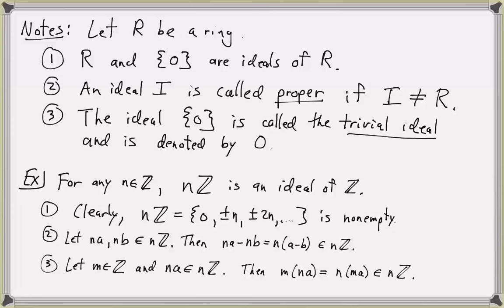These are the three requirements to show that nℤ is an ideal: it's non-empty, closed under subtraction, and closed under arbitrary multiplication by elements of the ring ℤ.